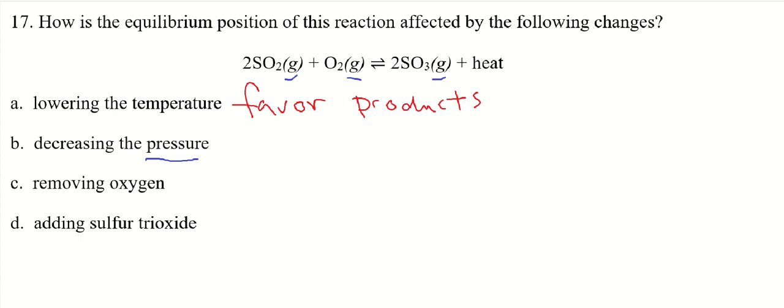So if you notice here on the reactant side, we have three. All right, we have two there, one there. You can say three molecules of gases or three moles of gases compared to the two on the product side. So this is going to favor the reactants.